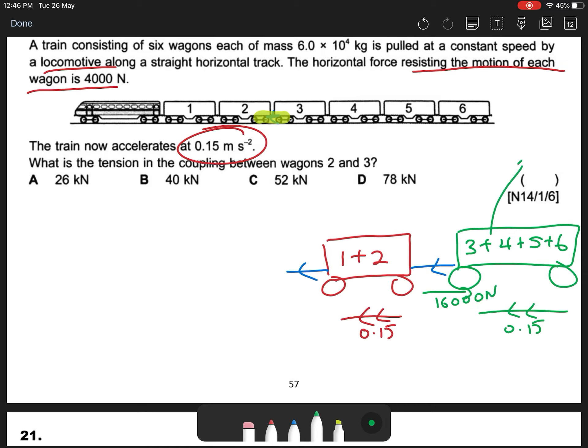Okay, so the total mass of my 4 wagons is how much? The total mass of my 4 wagons is about 24 × 10^4 kg. So this is my total mass.